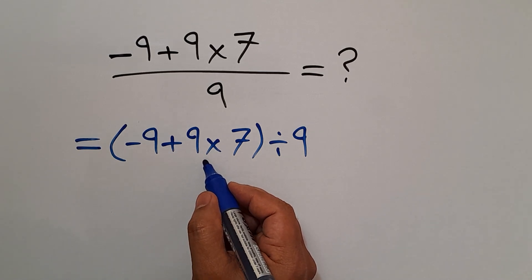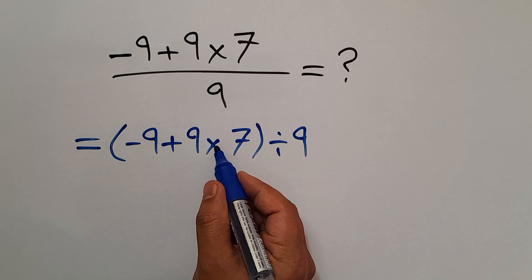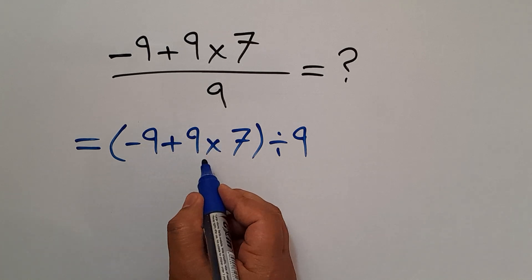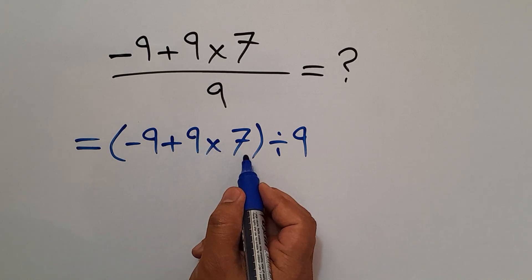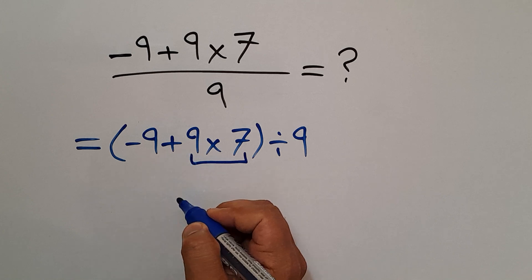According to the order of operations, multiplication has higher priority than addition. So first we do 9 times 7, which equals 63.